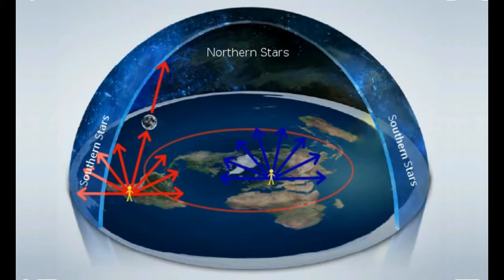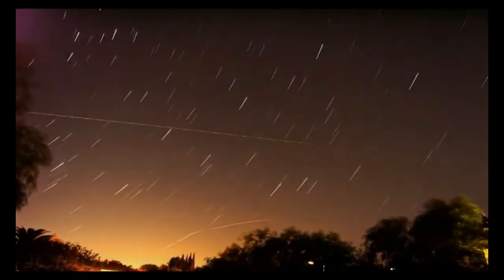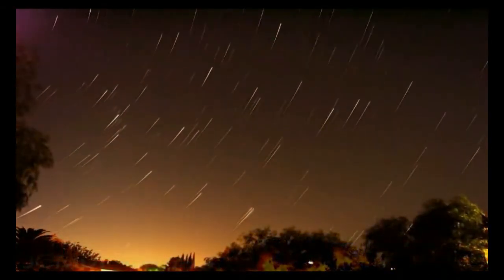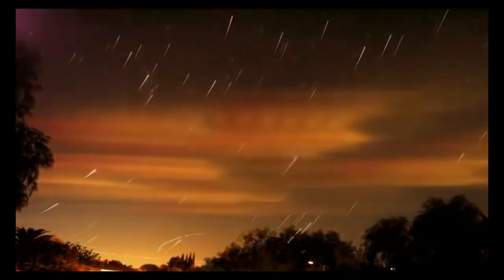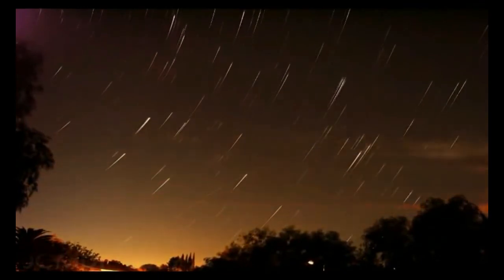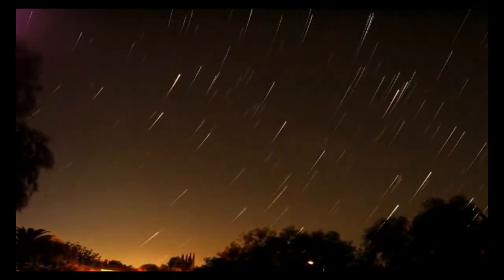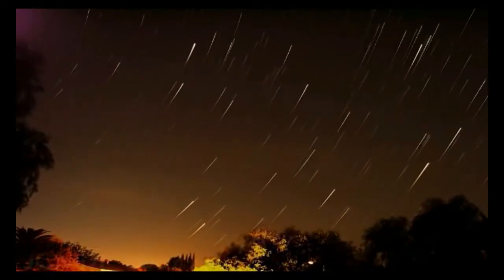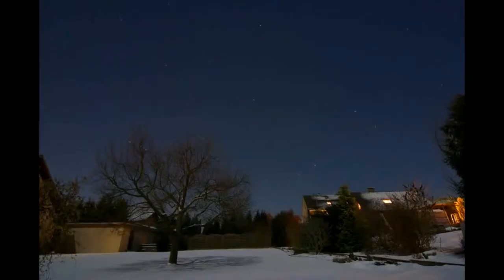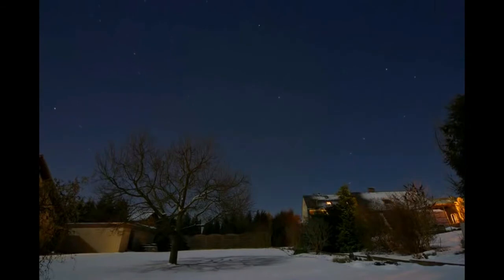And it only gets worse for the Flat Earth model. The nightly rotation of stars is perfectly explained by the Earth's rotation on its axis. Every night, we see the stars rise and set overhead. They move very slowly, but if you watch for half an hour or so, you will notice them change positions, moving from east to west. In the Northern Hemisphere, you will also notice the stars to the north rotate counterclockwise around a central point, called the Celestial Pole, very near a star called Polaris.